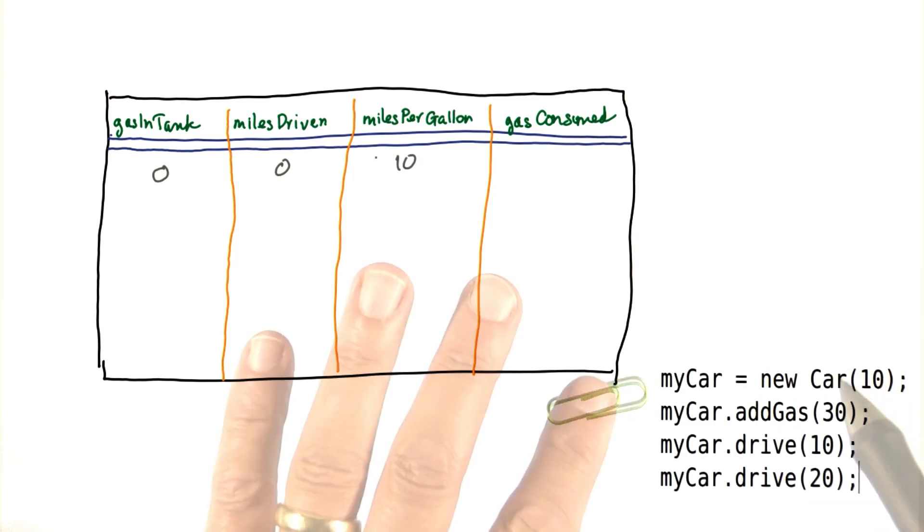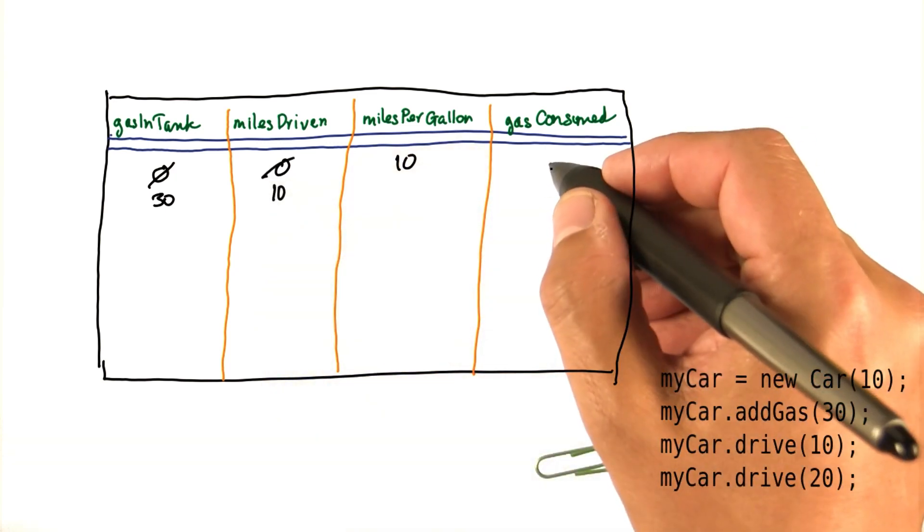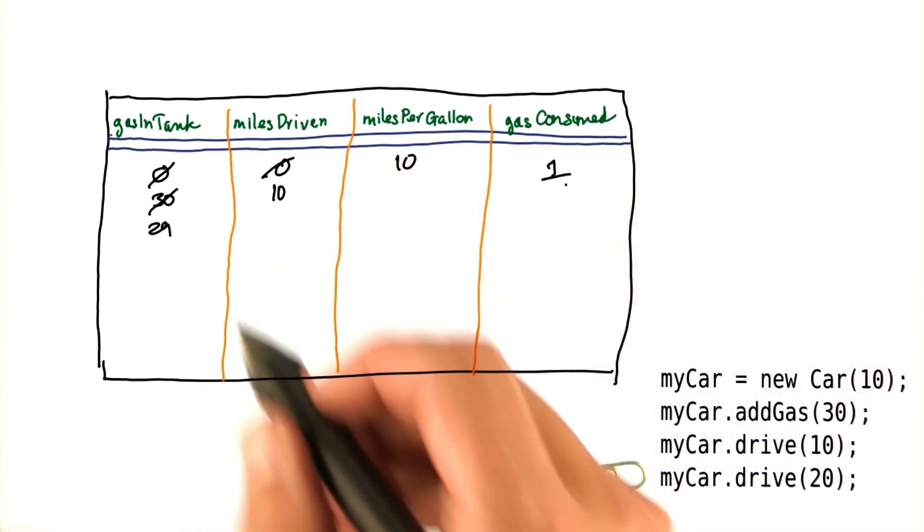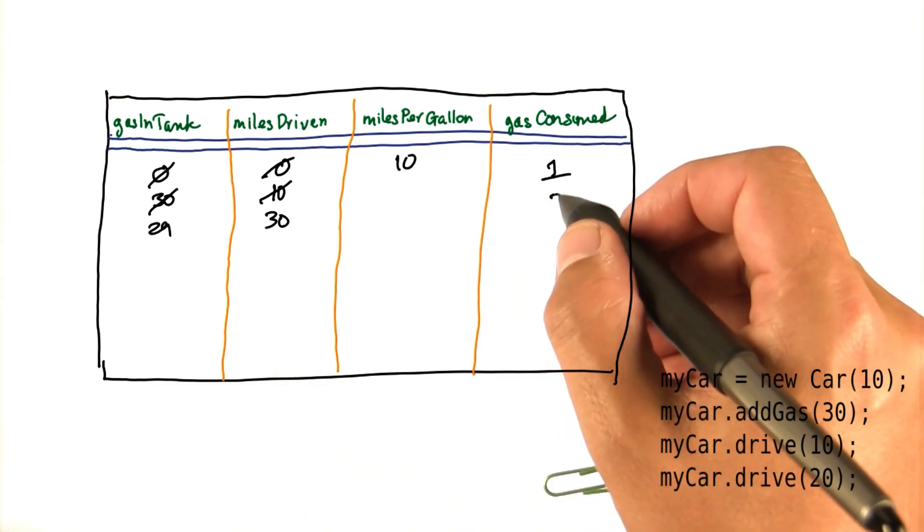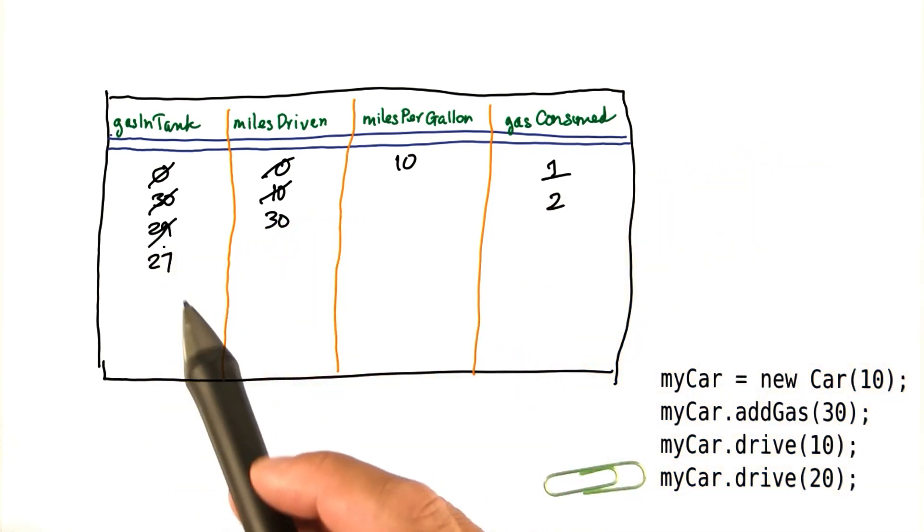The car gets constructed. We add 30 gallons. We drive 10 miles. That consumes a gallon. We then drive 20 miles for a total of 30. That consumes 2 gallons. We're left with 27 gallons.